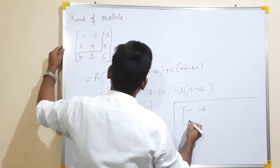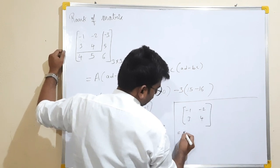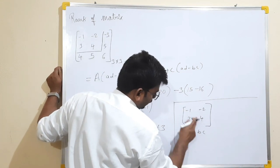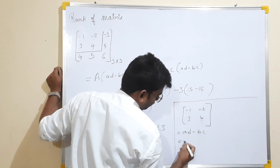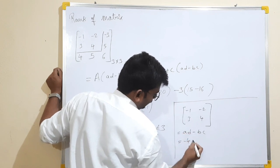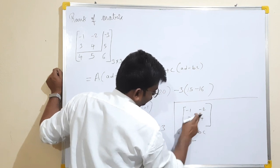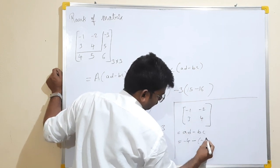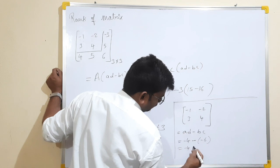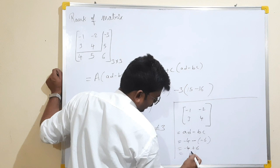Minus 1, minus 2, 3 fourth. AD minus BC. 4 ones are A, D — 4 ones are minus 4. 1 into 4. 4 minus. B and C — 2, 3s are 6. Minus 6. Minus into minus — minus 4. Minus into minus. Plus 6 minus 6. Add this as plus 2.